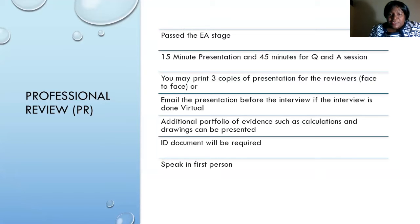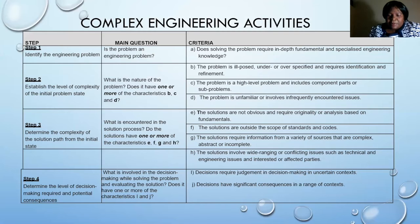At the Professional Review, having passed the EA stage, there is a 15-minute presentation followed by a 45-minute question-and-answer session. You can print copies of the presentation or email it if virtual. You may also present additional calculations and drawings. Present your ID and speak in the first person.